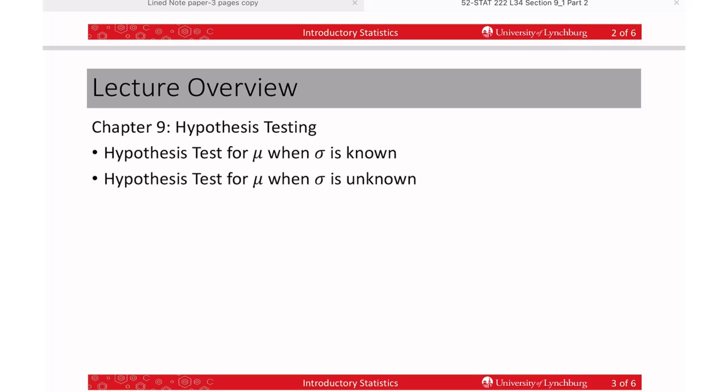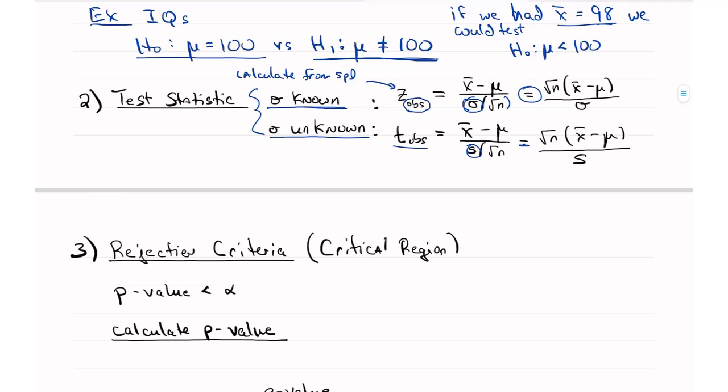The rejection region. Now, in this book, we don't use one of the methods, which is completely equivalent, where we get a critical value. But the book decided that it makes more sense to teach the p-value method, because that's what computer programs give you.